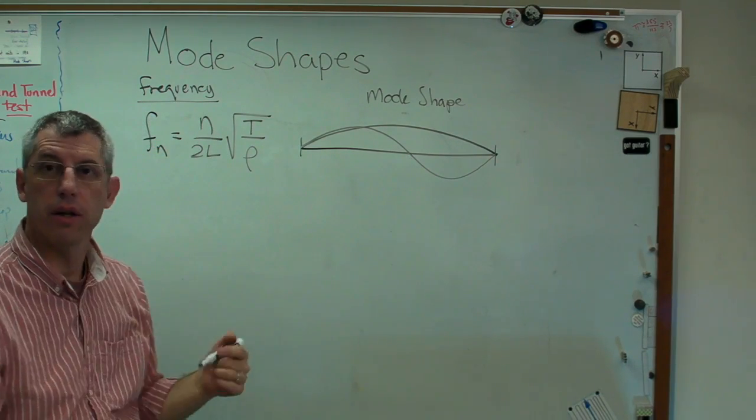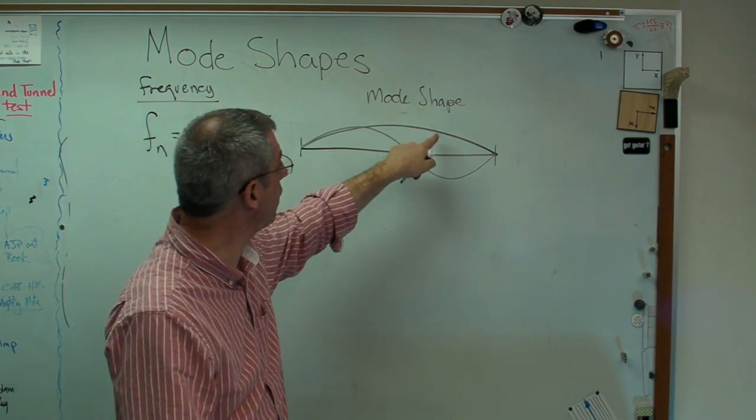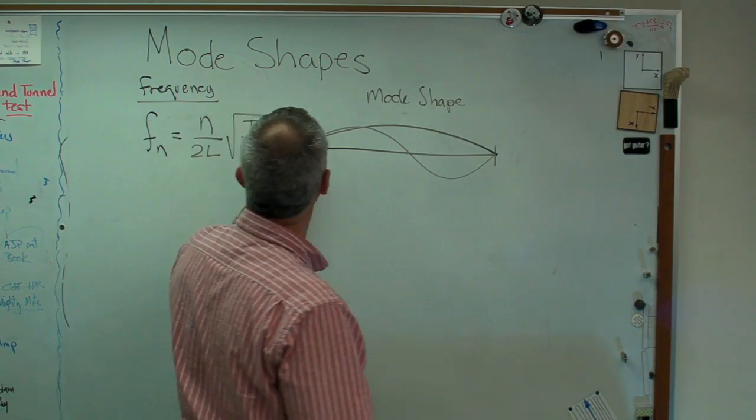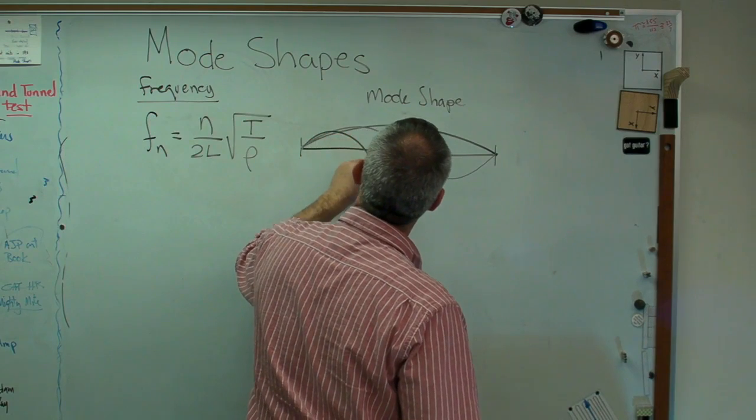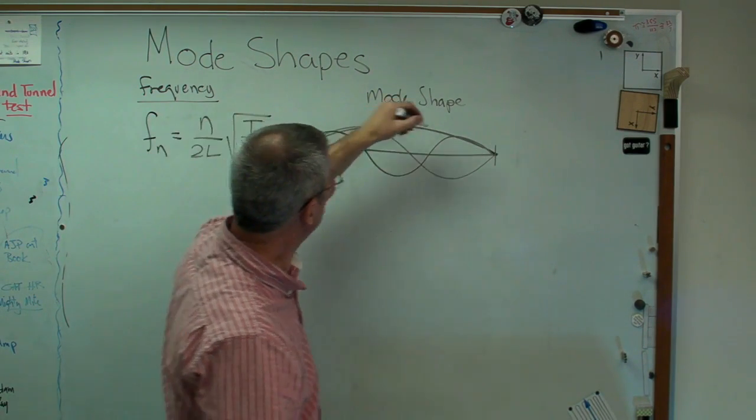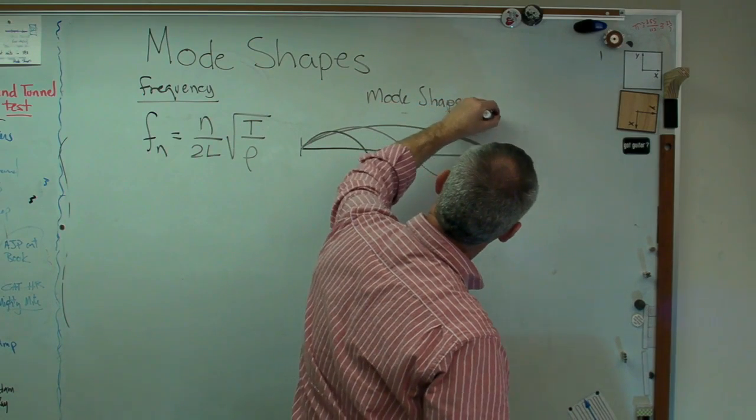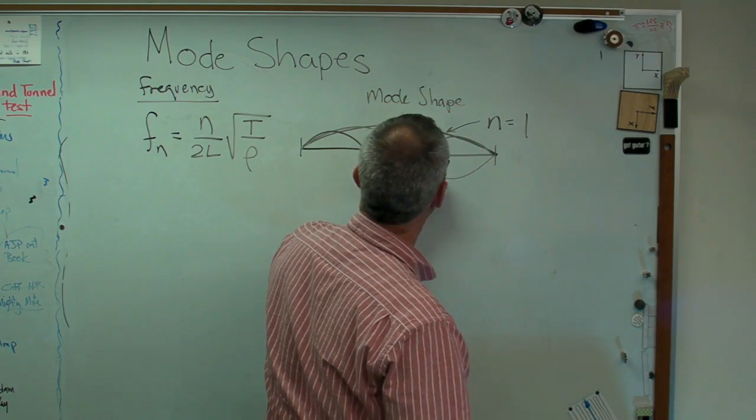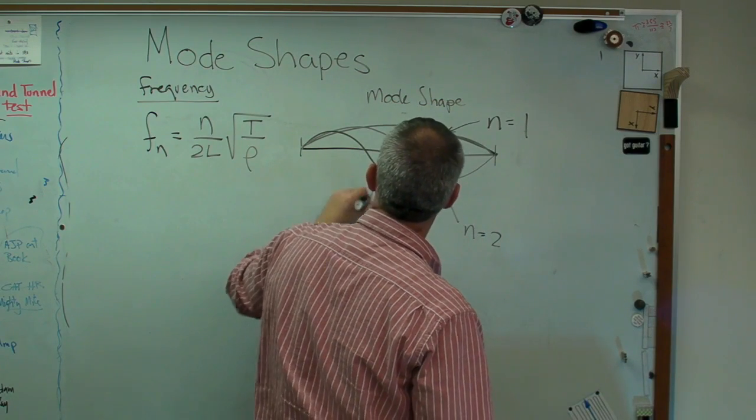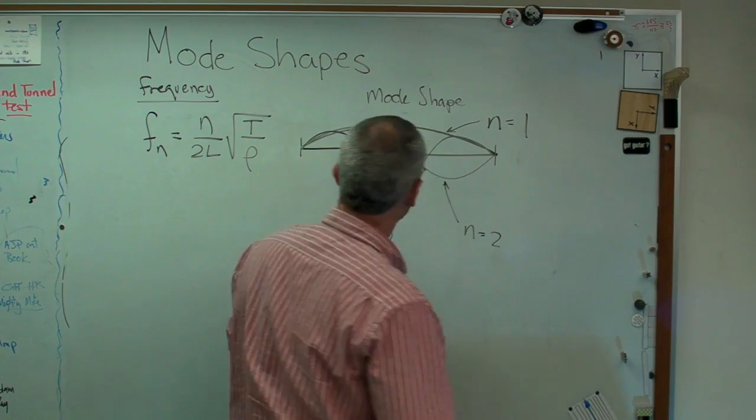So if n is 3, we're going to have, guess what? That was half a sine wave. That was a full sine wave. We're going to have a sine wave and a half. So let's see if I can do this here. It should look like that. So this is right there. That's n equals 1. That one's n equals 2. And that one is n equals 3.